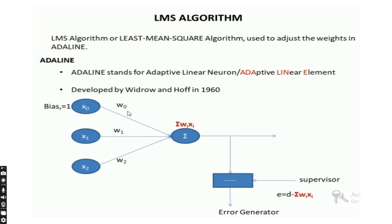In the previous class, while designing a dynamic system, we saw how the dynamic system is influenced by an algorithm, and based on that algorithm we get the desired output and error signal. In the same way, one of the algorithms for the network is the LMS algorithm — the Least Mean Square algorithm — where the same adaptive filtering technique is applied.